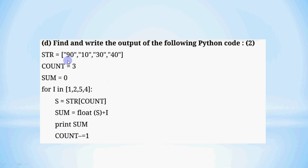The first line: `str` is assigned a list — the square brackets mean it's a list — with 4 values. These values are in double quotes, which means the data type is a string. So 90, 10, and the other numbers are stored in string format — they are numbers, but stored as strings.